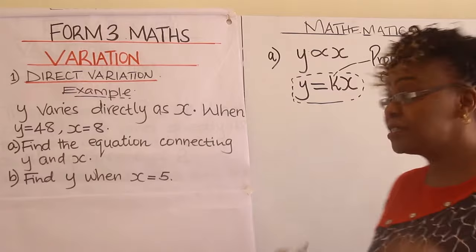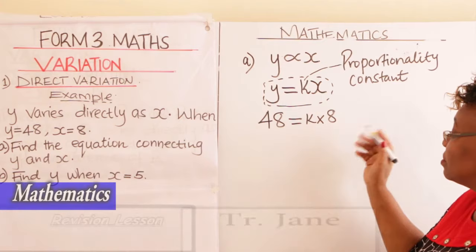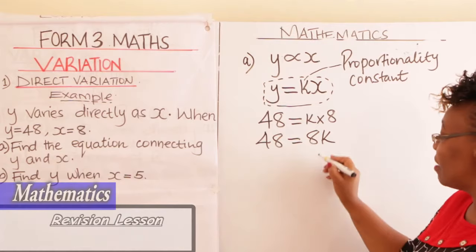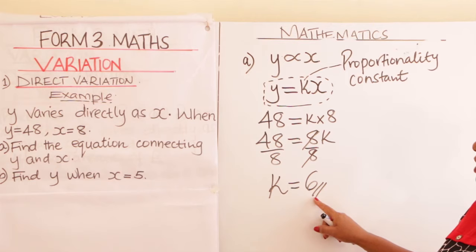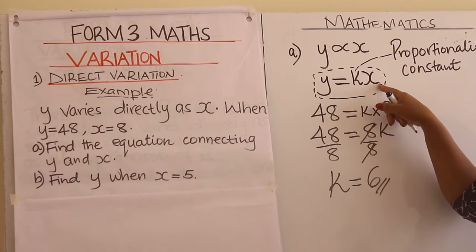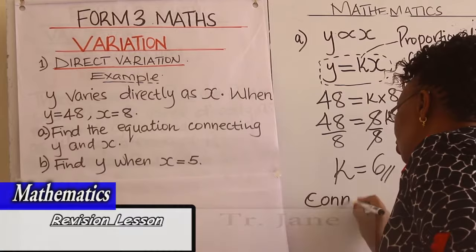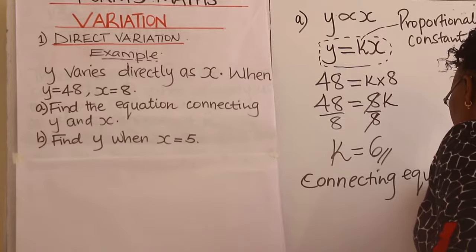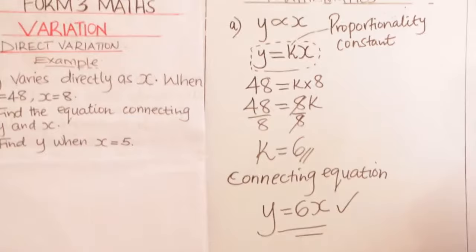We go to the second sentence: when Y is 48, X is 8. Come and substitute: 48 equals K times 8, which gives us 48 equals 8K. Divide both sides by 8, so K equals 6. After getting your proportionality constant K as 6, come and fix it into the equation. We call that the connecting equation — the equation that connects Y to X. Therefore, the connecting equation is Y equals 6X.